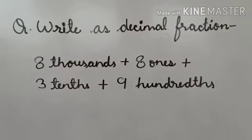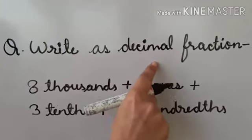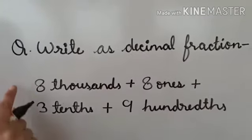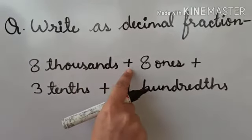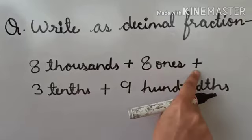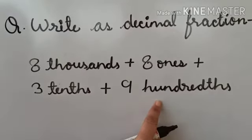Let us solve an example. Here the question is write as decimal fraction of this expanded form: 8000 plus 8 ones plus 3 tenths plus 9 hundredths.